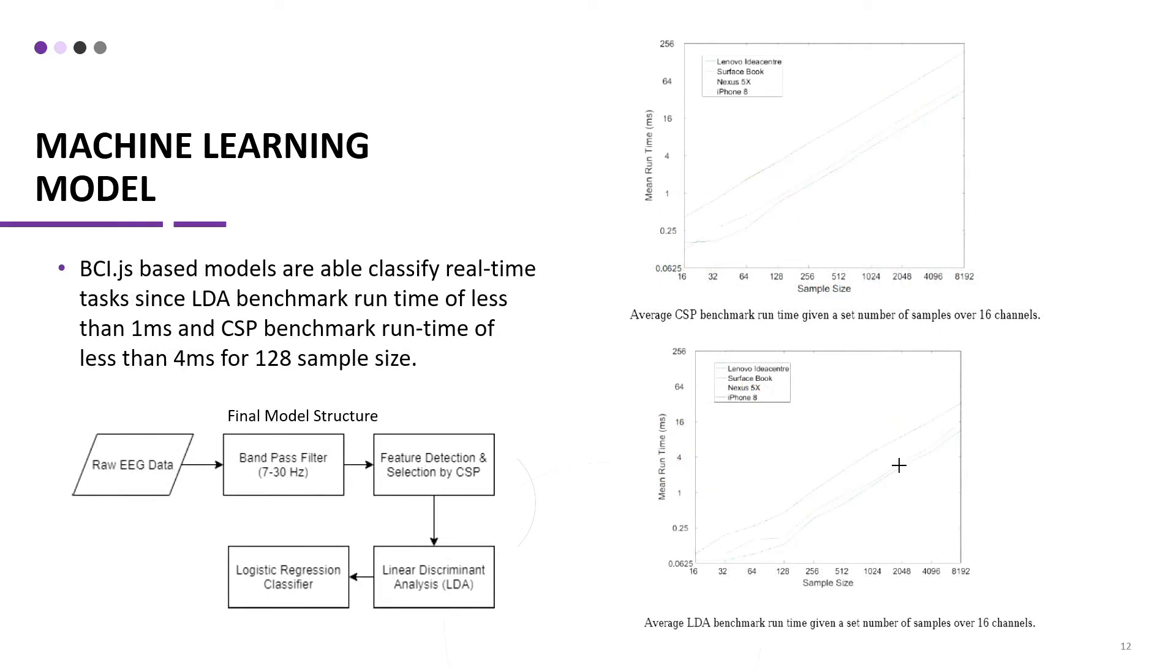The biggest advantage of our system is that it can be used for real-time classification. As shown here in the figure on the right, we have the benchmark for both the CSP and LDA algorithms. As for CSP benchmark, it has a runtime of less than 4 ms for 128 sample size. Similarly, for LDA, the benchmark runtime is less than 1 ms, making the whole classification process for 128 sample size less than 10 ms for the whole thing, which is very suitable for real-time applications.